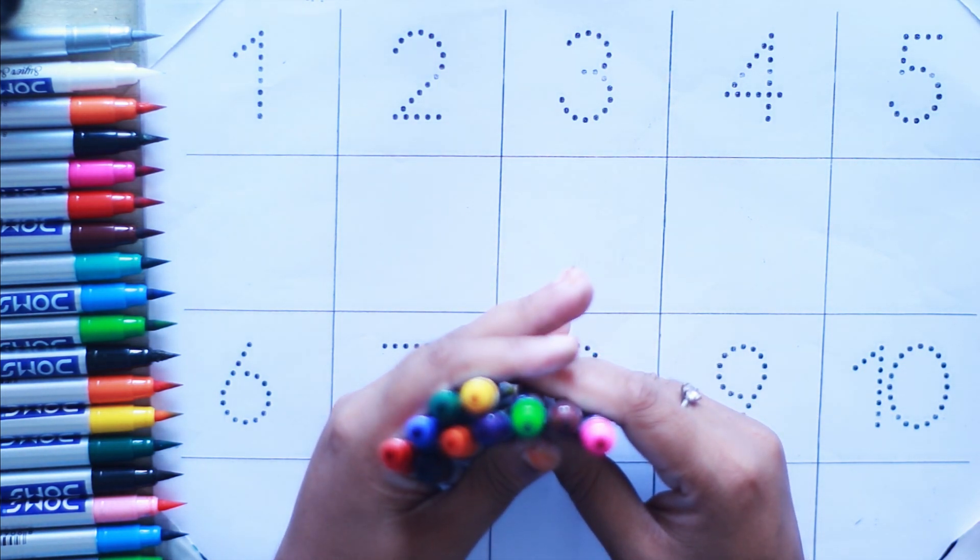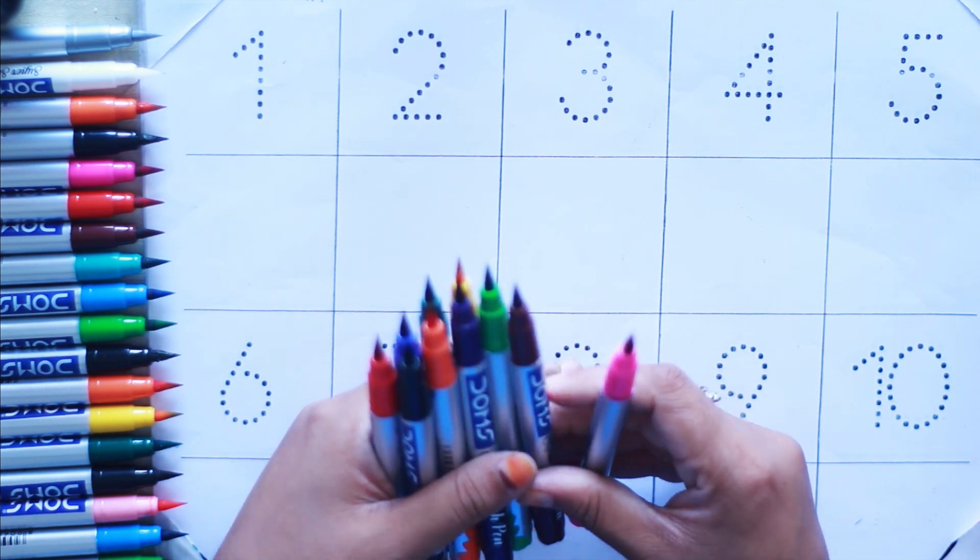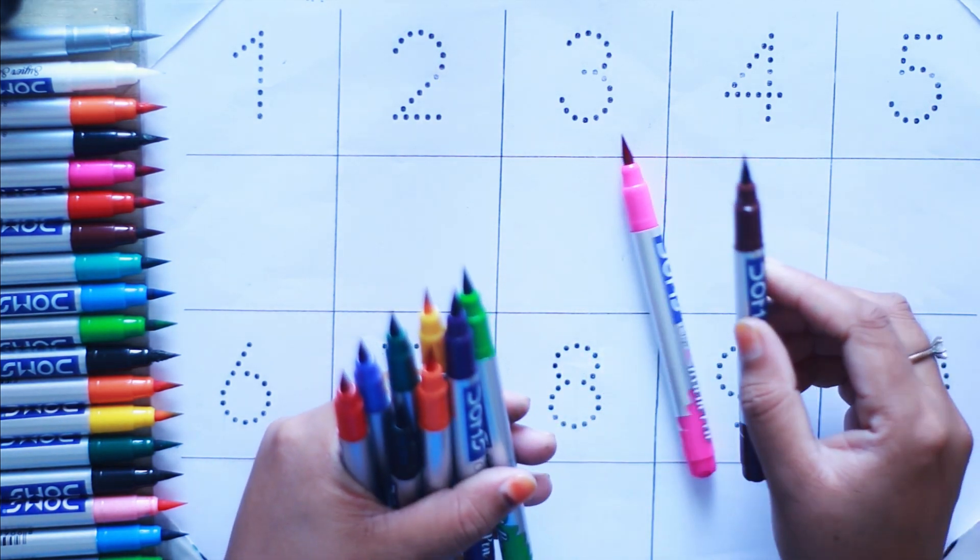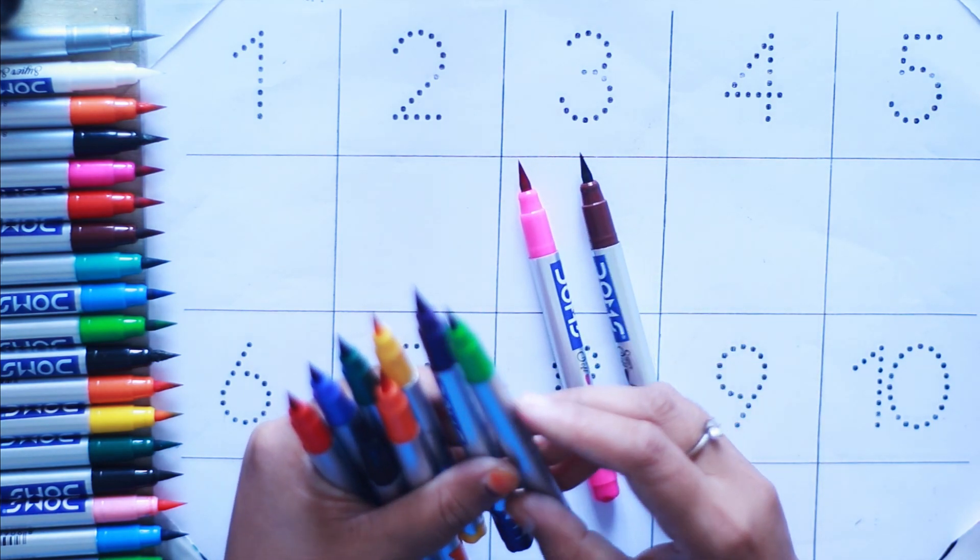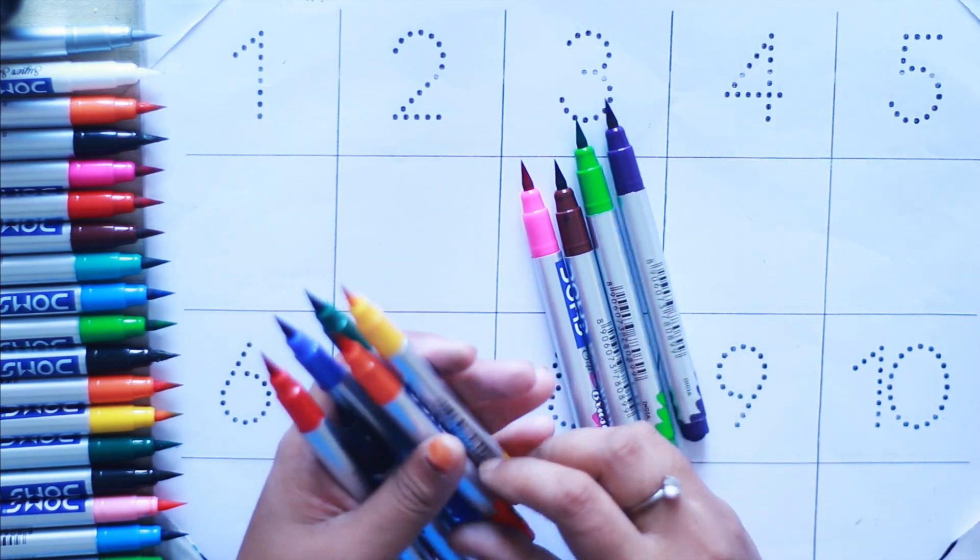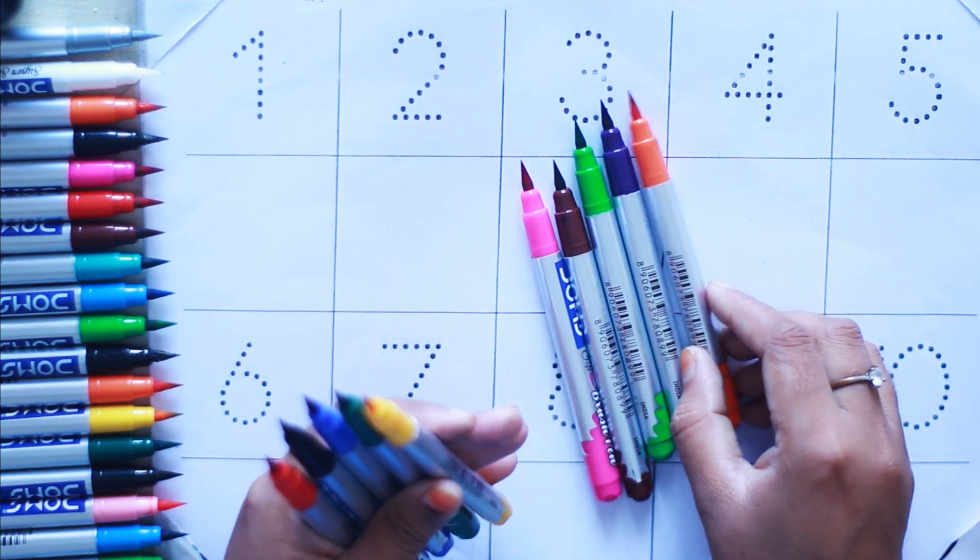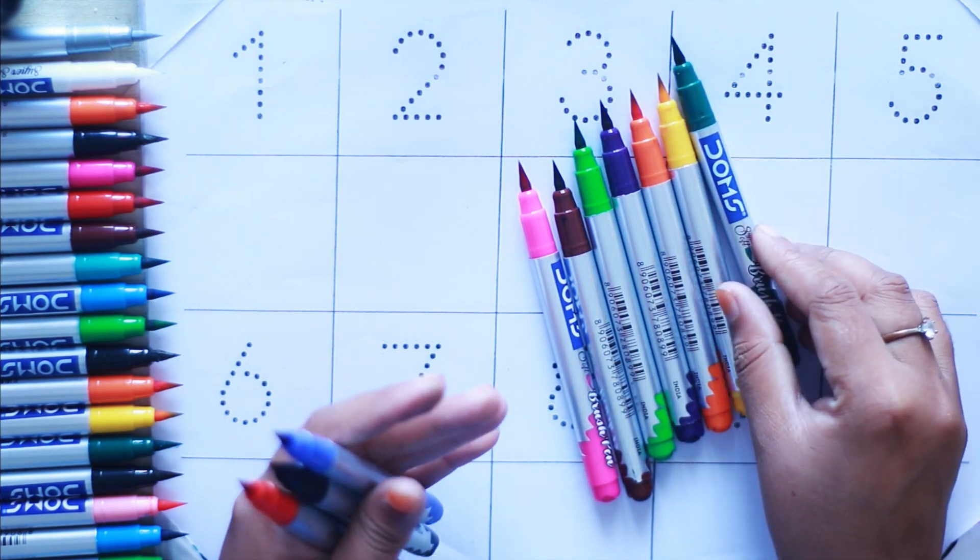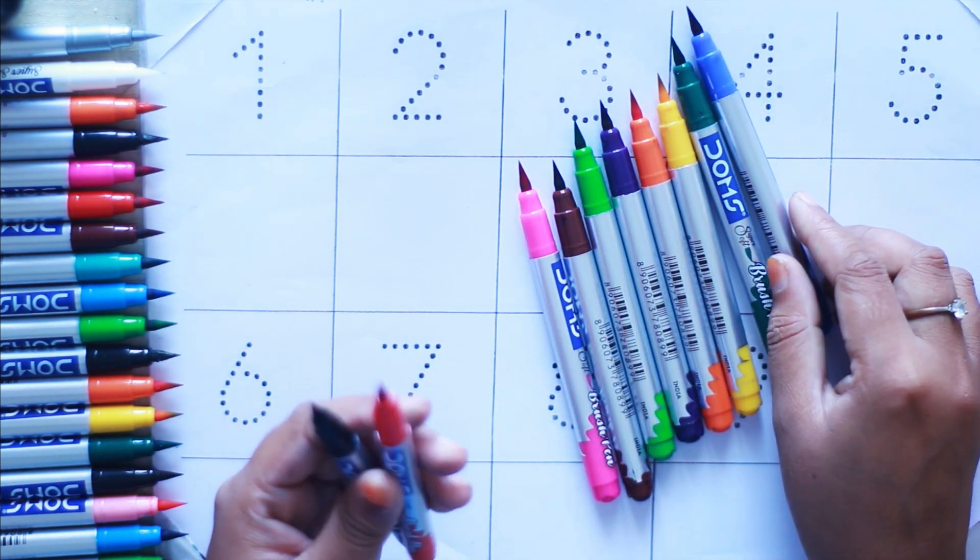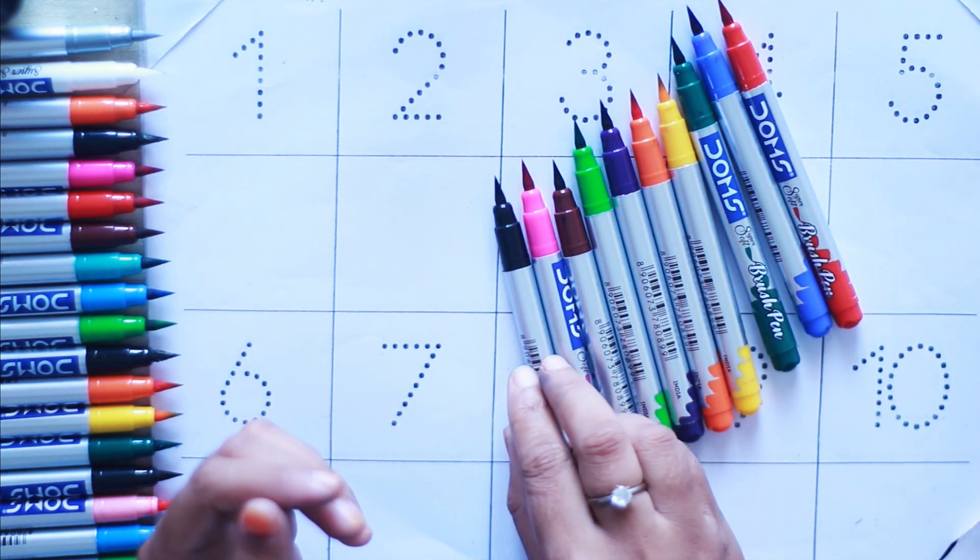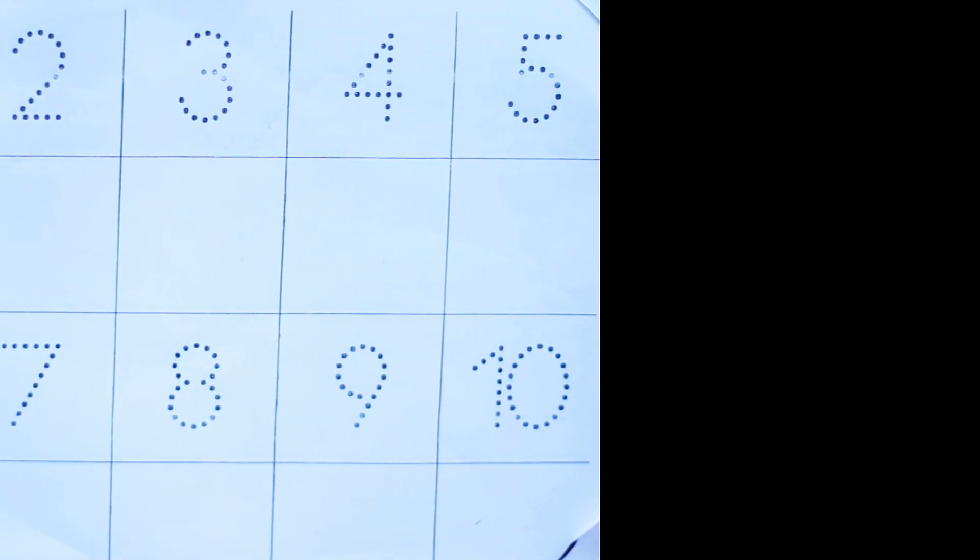Let's introduce some color names. Pink color, Brown color, Light green color, Violet color, Orange color, Yellow color, Green color, Blue color, Red color, and black color. Let's start.